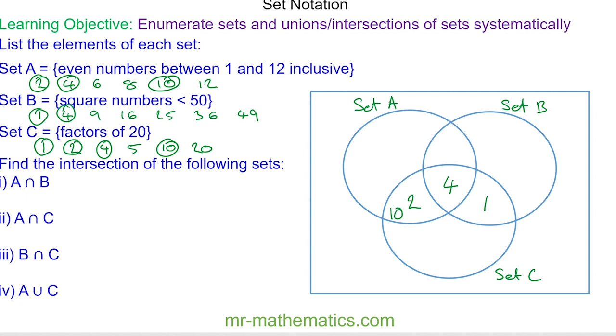We'll finish off with set A. We have 6, 8, and 12. Moving on to set B: 9, 16, 25, 36, and 49. And finally with set C we have 5 and 20.